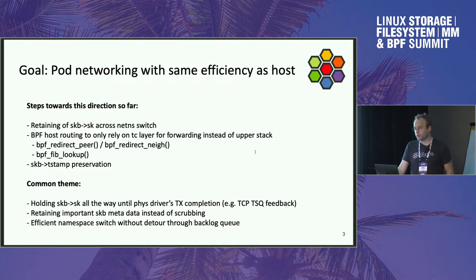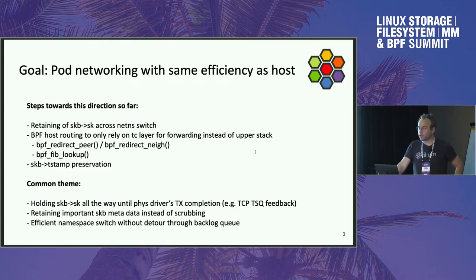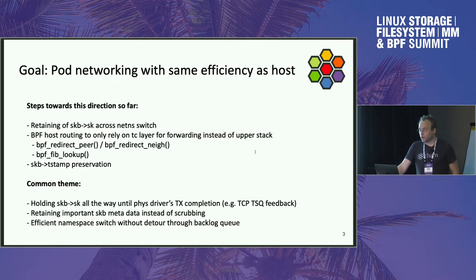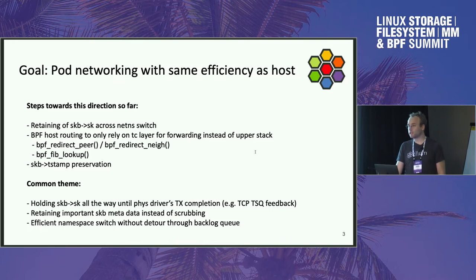The latest thing is basically SKB timestamp preservation. If you look at all of those, they have a common theme. One is to hold the SKB socket association all the way from the pod's network stack to the physical driver when you send the packet out, and only then signal the TCP stack from the pod network namespace that the packet is actually on the wire. This gives better feedback, for example, for TCP TSQ. The other thing is to retain important SKB metadata that shouldn't be scrubbed — for example, the timestamp — and the other is an efficient network namespace switch, so you don't need to go through the backlog queue.